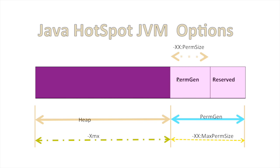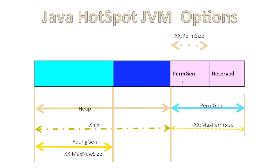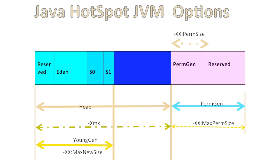In the heap area, the first block is young gen. The total heap area is configured with -Xmx, and the young gen size is configured with -XX:MaxNewSize. The young generation is represented by this red block.